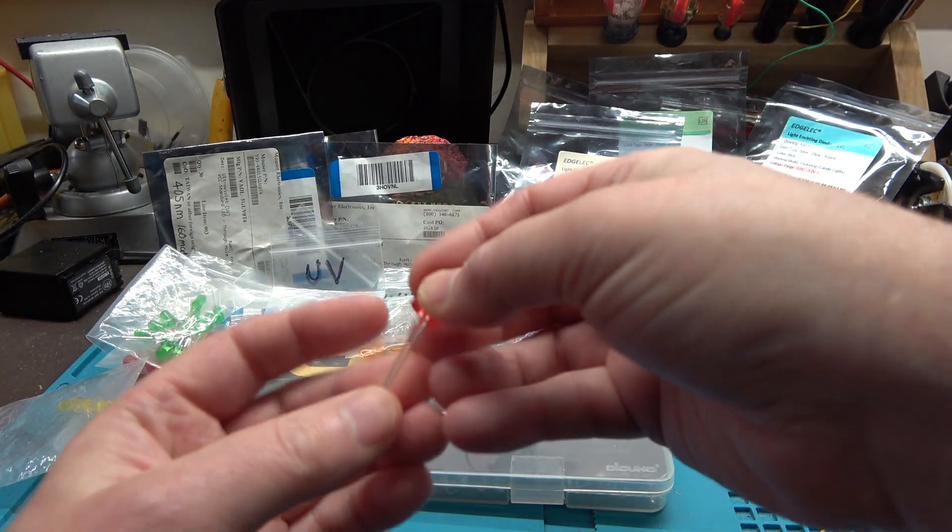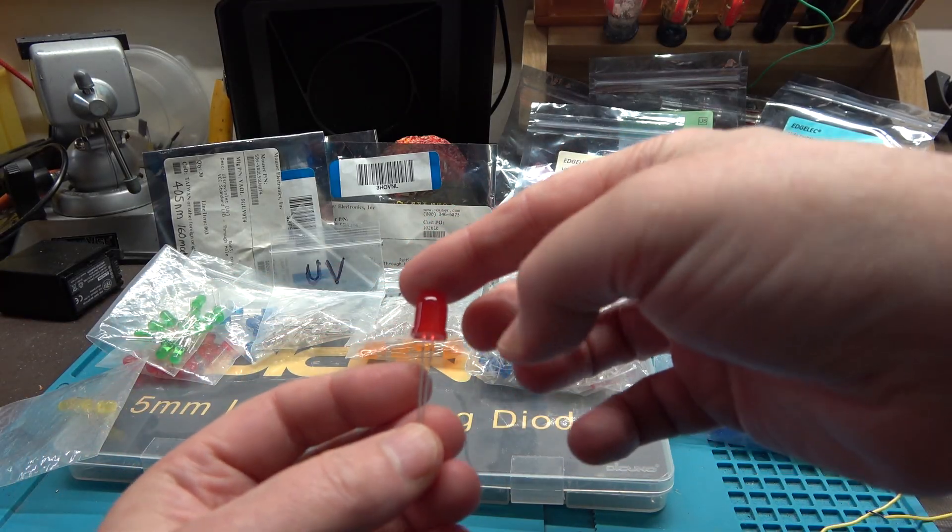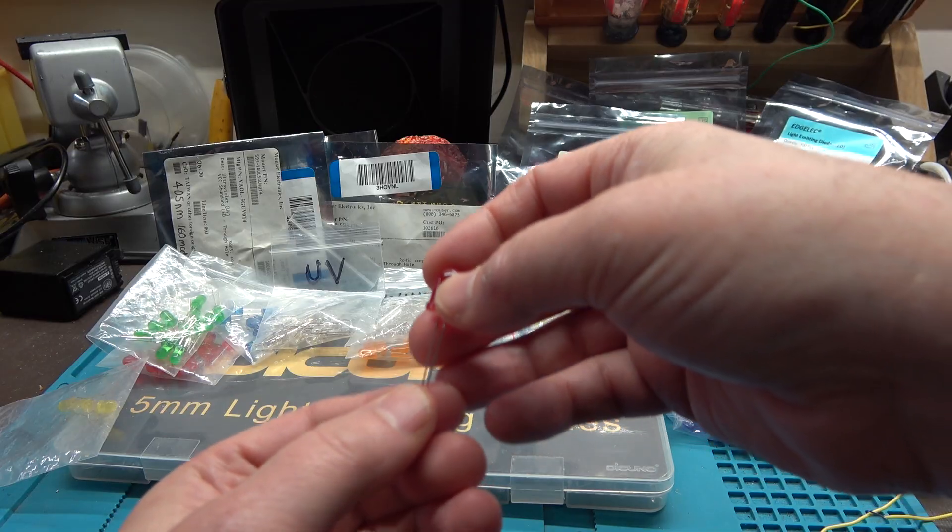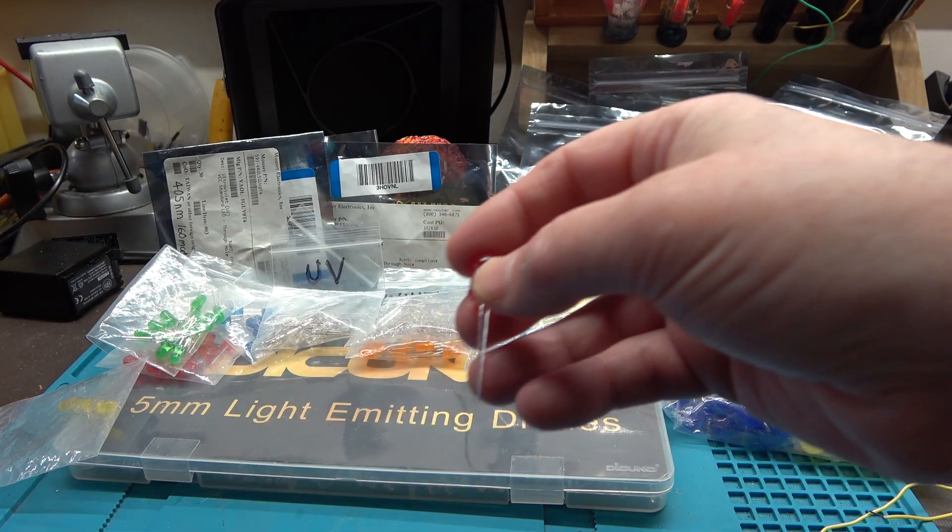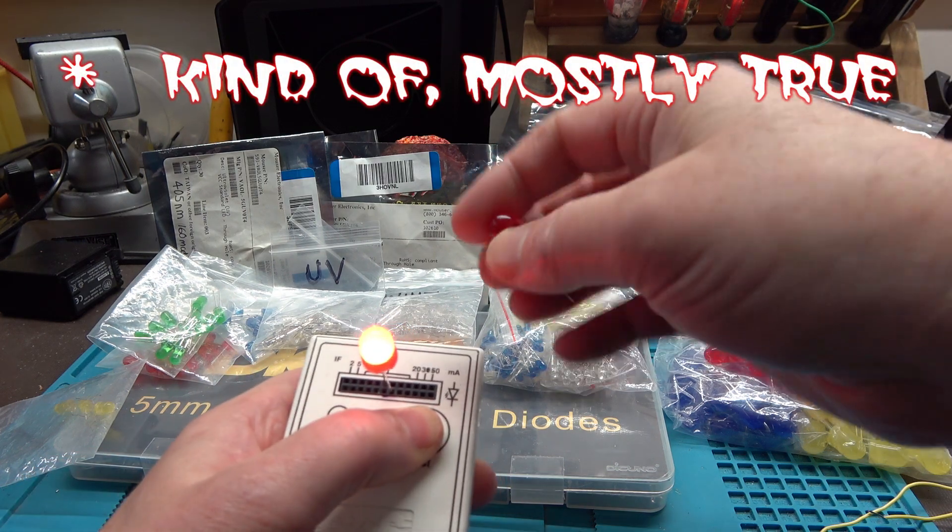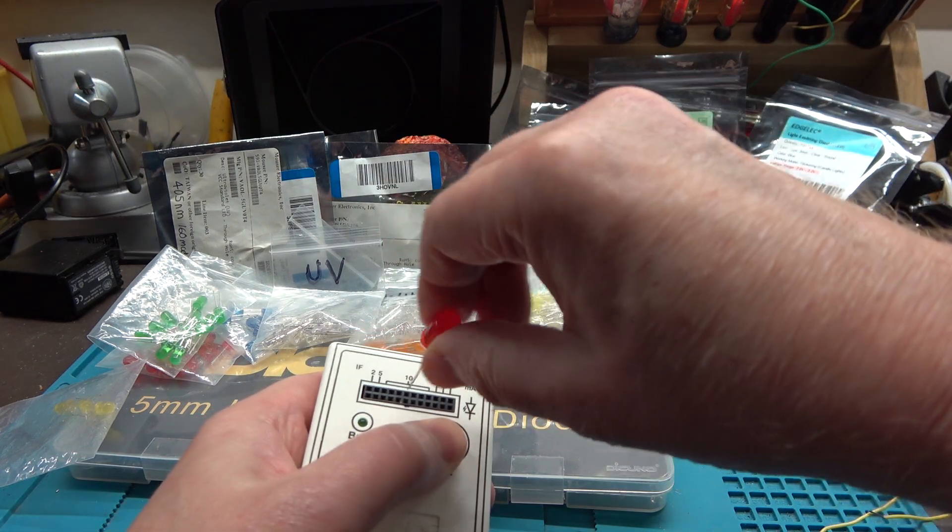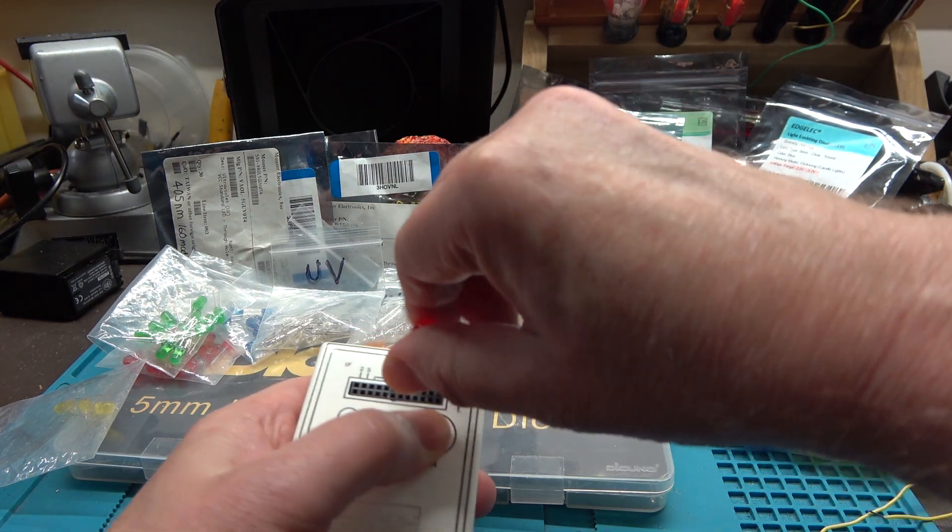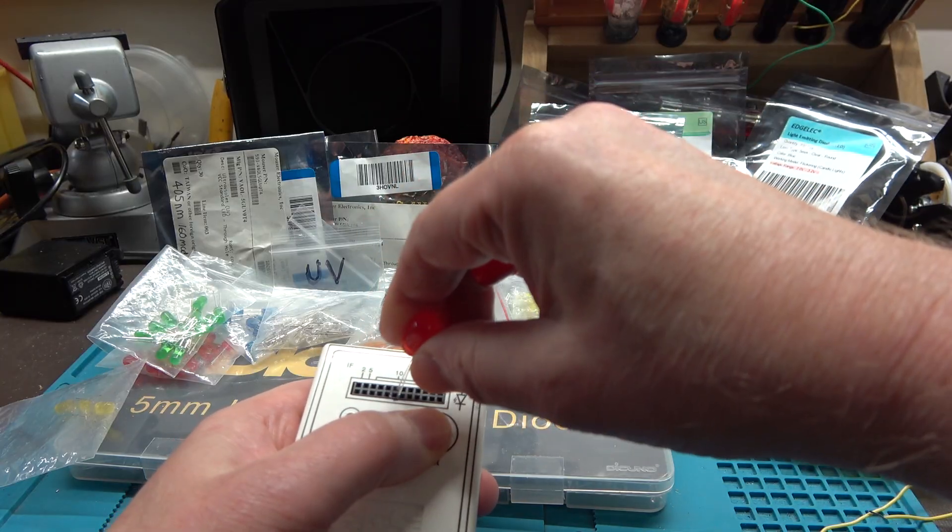Light emitting diodes, commonly referred to as LEDs, are kind of like a tiny light bulb with two key differences. First, they produce light by the amount of current, not voltage, that flows through them. And secondly, they have a polarity, meaning that they will only light up when the power is applied to them in the correct direction.